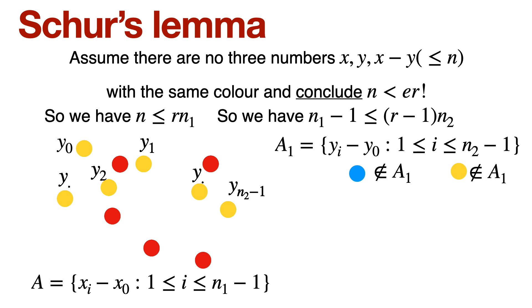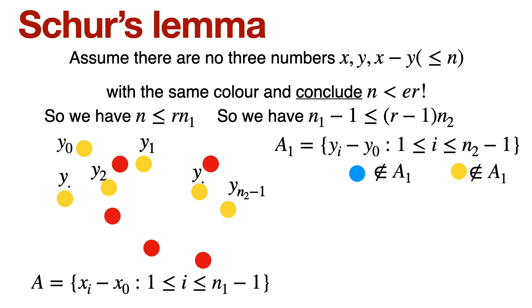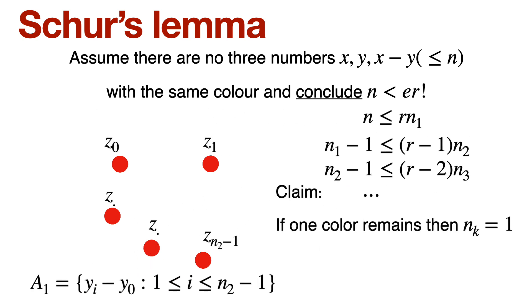So which means we learn that there cannot be any blue color in A1. So we have now a situation where A1 is a set with n2 minus 1 elements in it, and none of them can be colored yellow or blue. So it must be colored the remaining r minus 2 colors, right? So they must be colored by remaining r minus 2 colors, and we can keep going on doing this, right? We can say, okay, again, we argue, we take the difference, n2 minus 1 will be less than r minus 2 into n3, blah, blah, blah. You can keep going on until you finally remain with nk equal to 1.